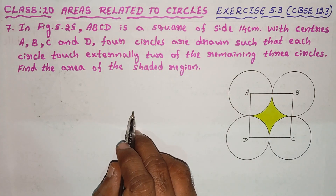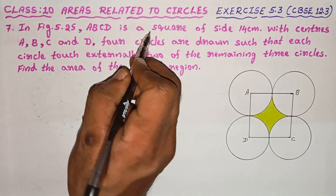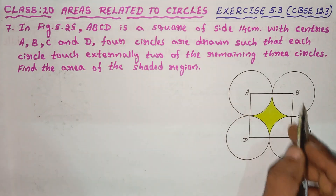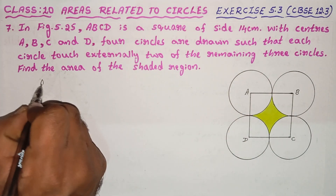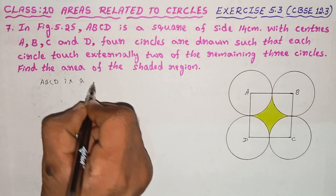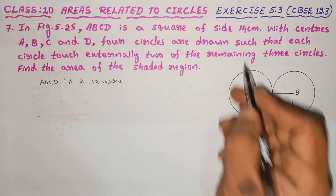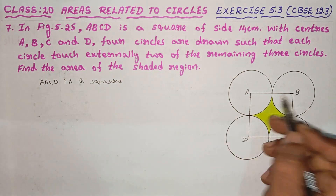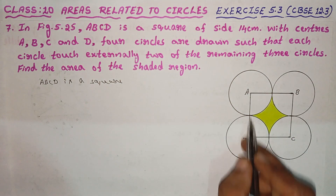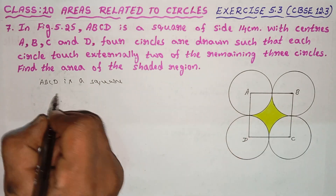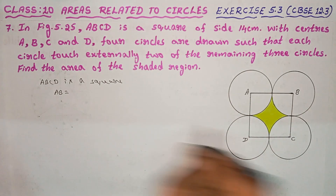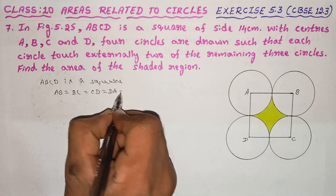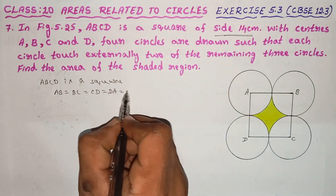Okay, let me explain the question. ABCD is a square of side 14 cm. The side is 14 cm.